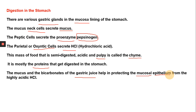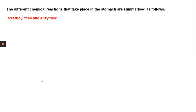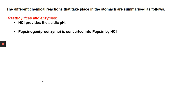The mucosal epithelium is protected from the highly acidic hydrochloric acid, and mucus also helps in lubricating the food. Looking at the gastric juices and enzymes and their chemical reactions: HCl provides the acidic pH; pepsinogen, which is a proenzyme, gets converted into pepsin by the action of HCl.